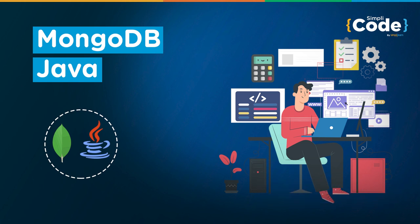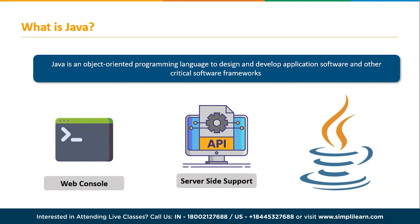So firstly, what is Java? Java is a multi-platform, object-oriented programming language that runs on billions of devices worldwide. Currently it powers applications, smartphone operating systems, enterprise software, and many well-known programs. It is basically used to design and develop application software and other critical software frameworks.